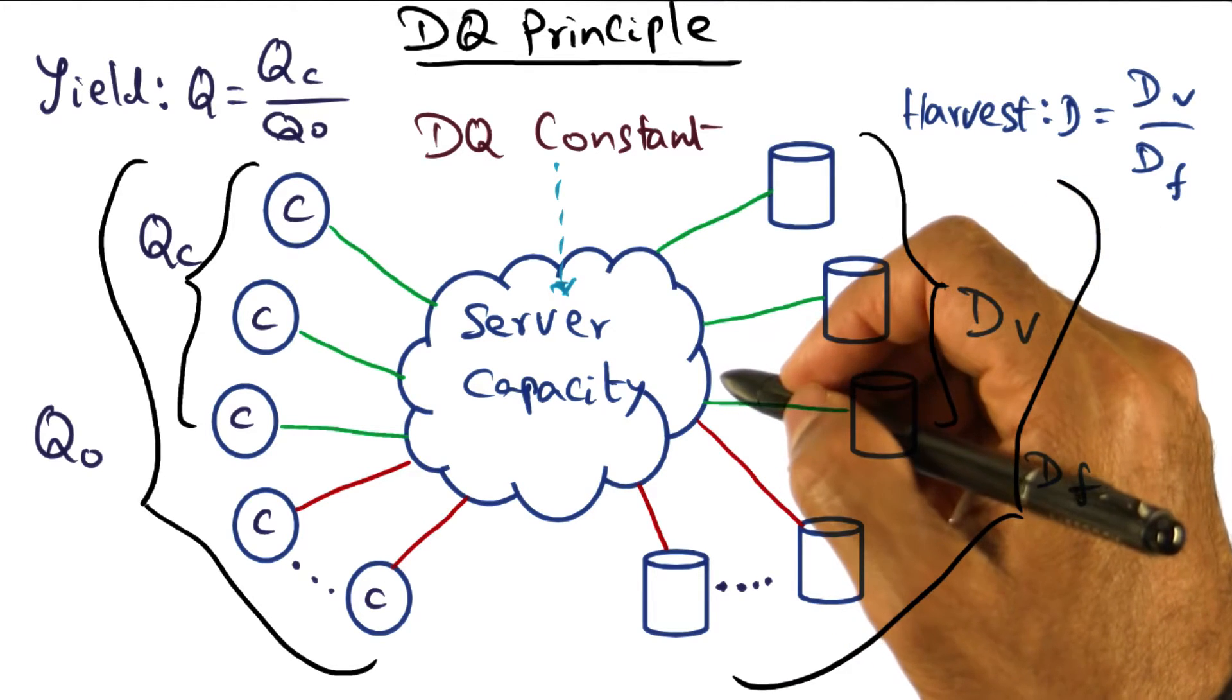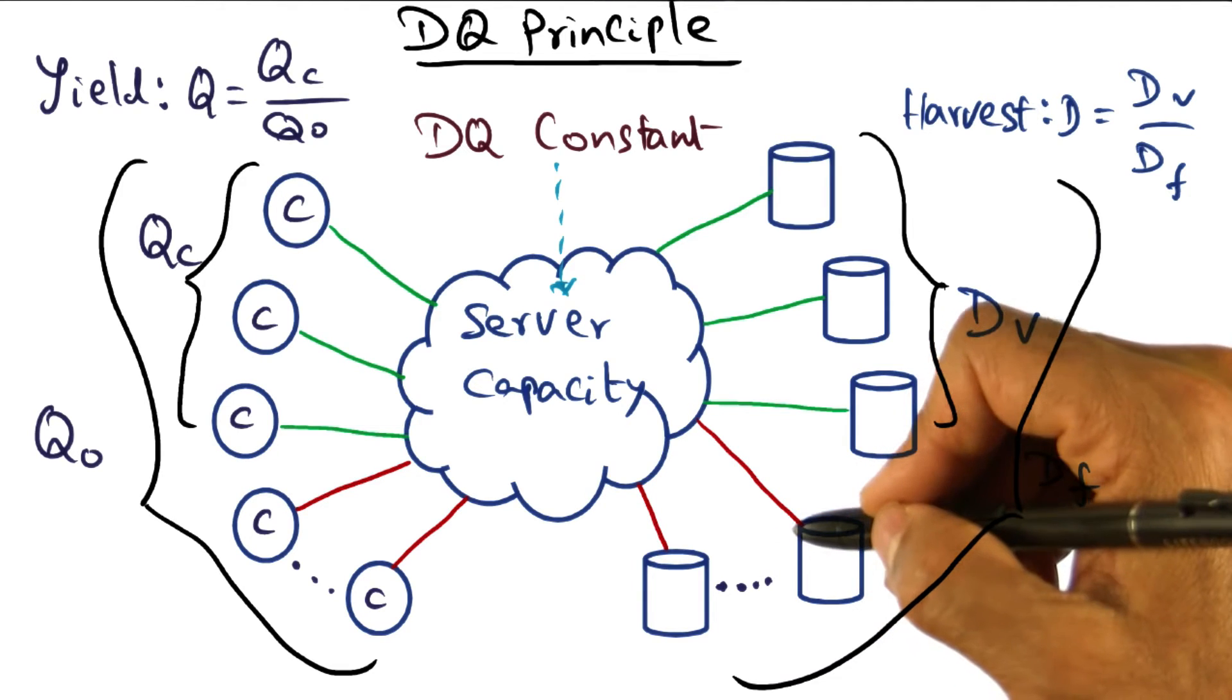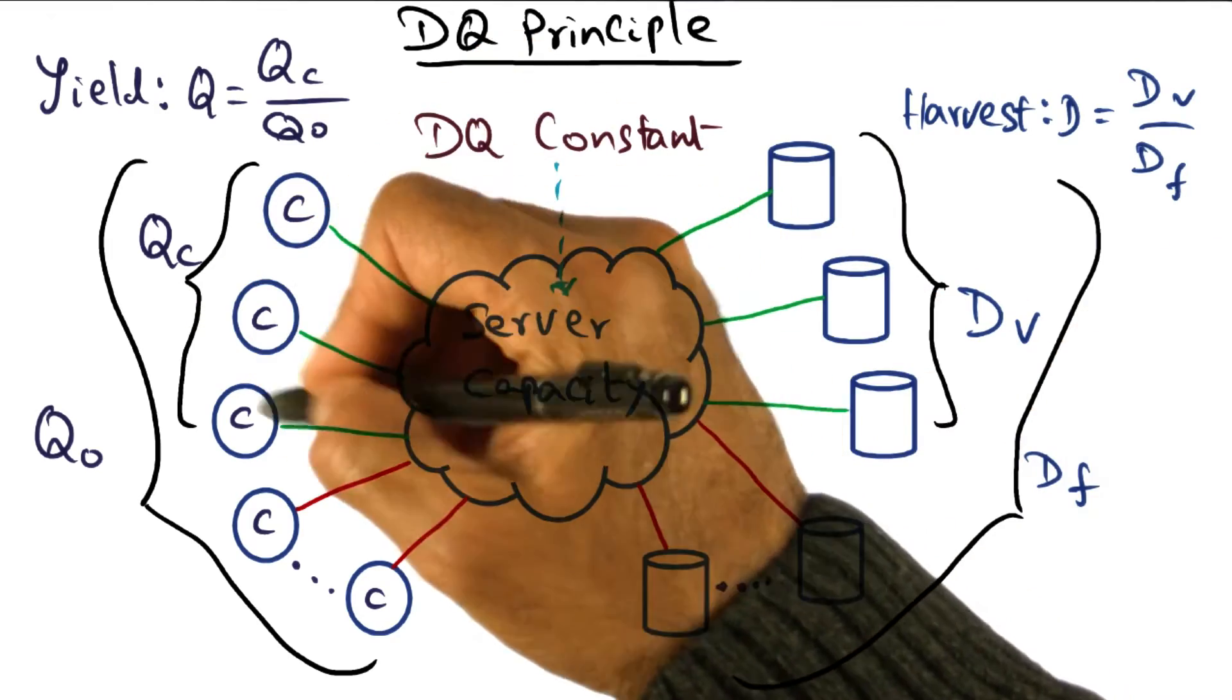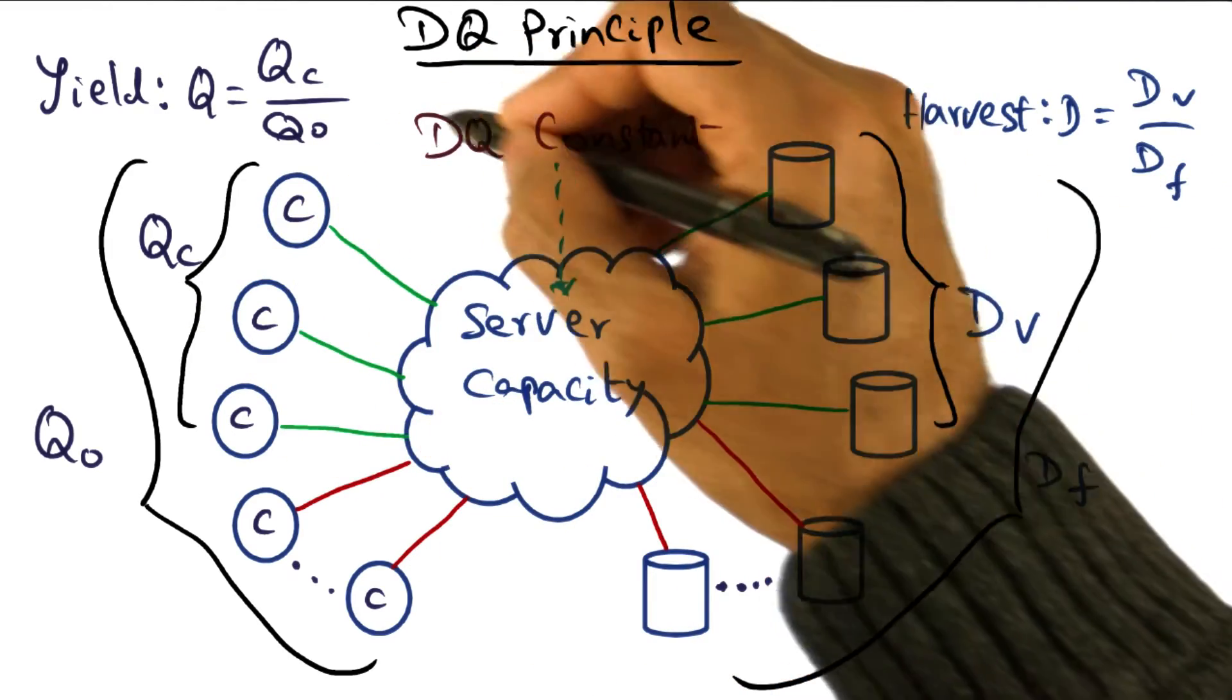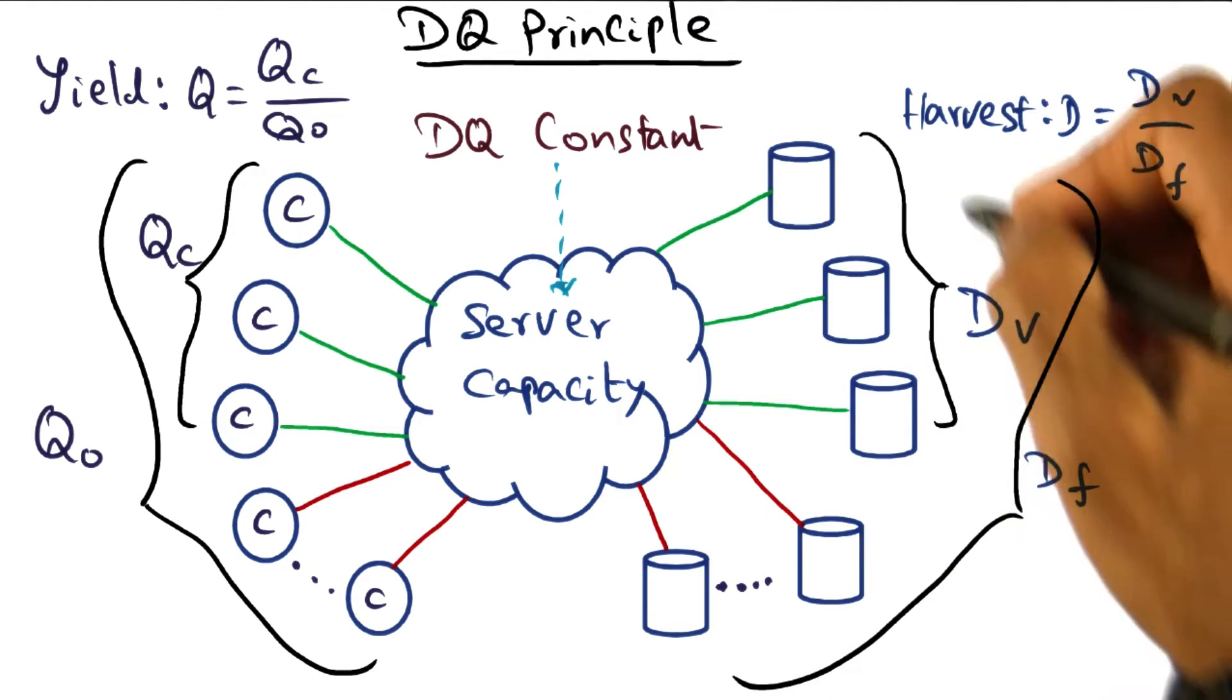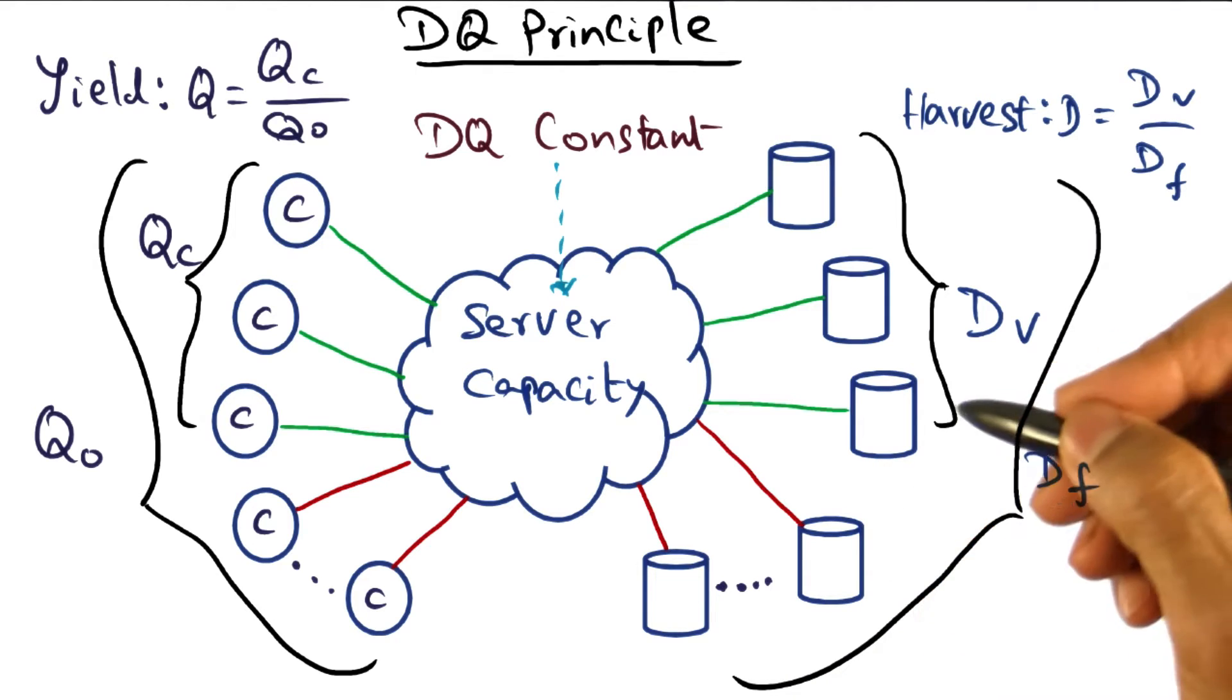Similarly, if I'm a system administrator and some nodes in the server fail, then again we have a choice of either decreasing the harvest or decreasing the yield in order to deal with the reduced DQ value. Of course, it all depends on how the server itself is architected, if the failures can be hidden through replication and so on.